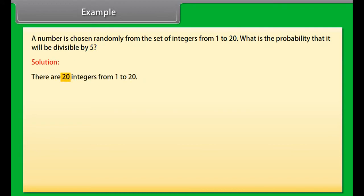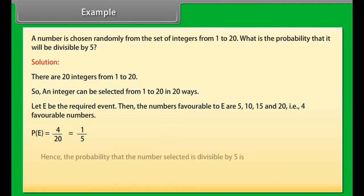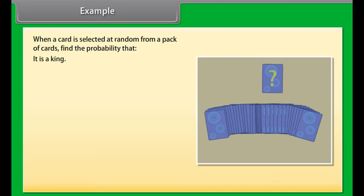The probability of a sure event is 1. Solution: A number is chosen randomly from the set of integers from 1 to 20. What is the probability that it will be divisible by 5? There are 20 integers from 1 to 20, so an integer can be selected in 20 ways. Let E be the required event. The numbers favorable to E are 5, 10, 15, and 20, that is 4 favorable numbers. Probability of event E equals 4 by 20, which equals 1 by 5. Hence, the probability that the number selected is divisible by 5 is 1 by 5.